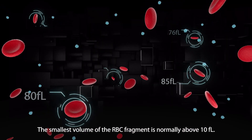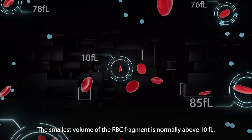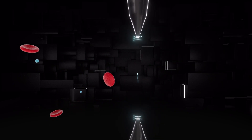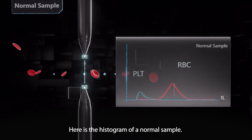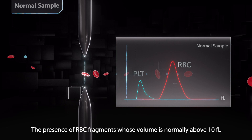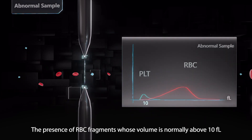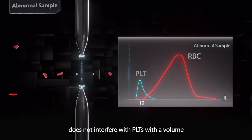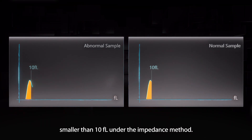The smallest volume of an RBC fragment is normally above 10 femtoliter. Here is the histogram of a normal sample. The presence of RBC fragments, whose volume is normally above 10 femtoliter, does not interfere with PLTs with a volume smaller than 10 femtoliter under the impedance method.